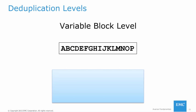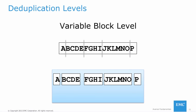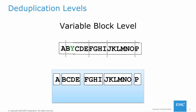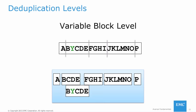Variable block level deduplication solves this inefficiency. Instead of creating blocks of fixed length, the file is scanned and blocks are cut whenever the data matches a pattern determined by a mathematical algorithm that consistently finds the same boundary points within the data. In the example on the screen, a simplified algorithm is used where blocks are divided after any vowel letter. This way, if data is changed, inserted, or deleted, the boundary points do not change—the algorithm will find the same boundary points. Only the block of data that has changed needs to be backed up and stored again. This level of deduplication is the most efficient and is the level used by Avamar.